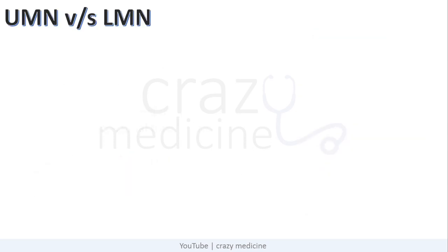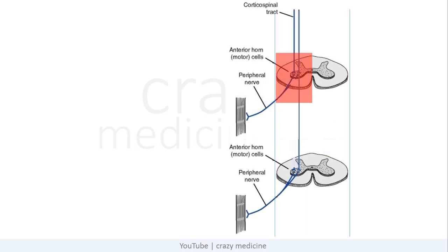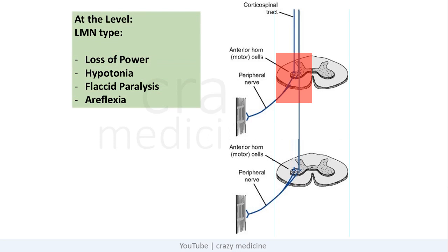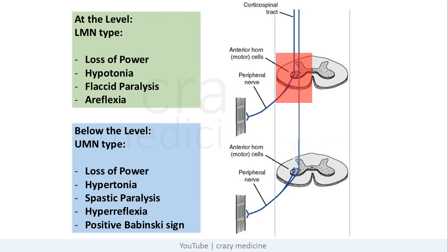Now we have to know whether the lesion is lower motor neuron type or upper motor neuron type. Conceptually, UMN is from centers to anterior horn cells in the spinal cord, and LMN is from anterior horn cells to peripheral nerves. Lesions in anterior horn cells are also considered as lower motor neuron type. So at the level of lesion there will be LMN type of lesion, characterized by loss of power, hypotonia, flaccid paralysis, and areflexia. And below the level there will be UMN type of lesion, characterized by loss of power, hypertonia, spasticity, hyperreflexia, and positive Babinski sign.